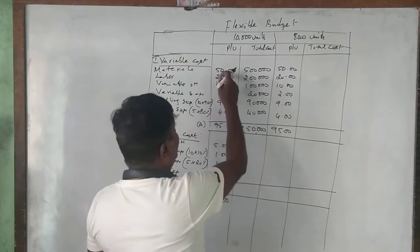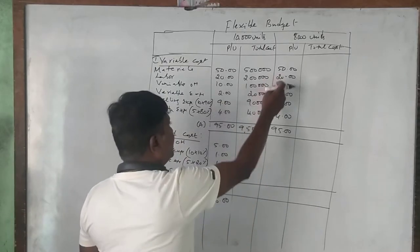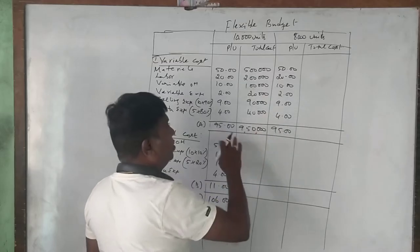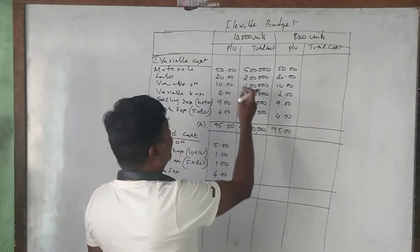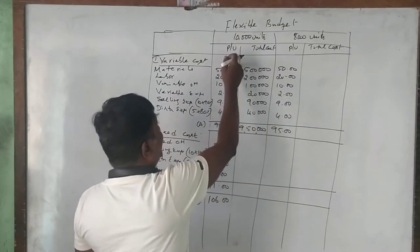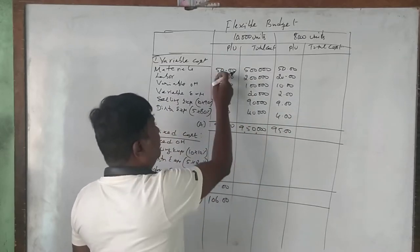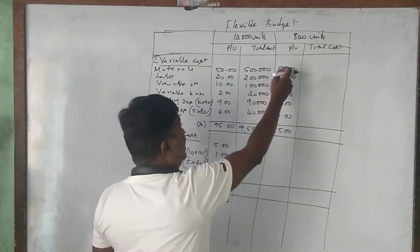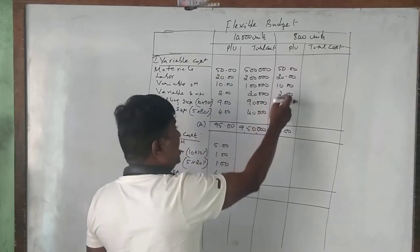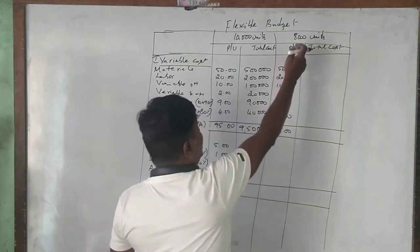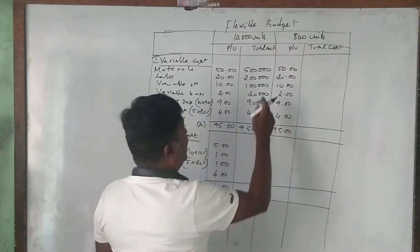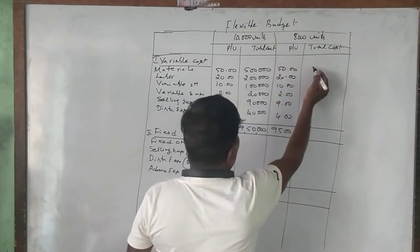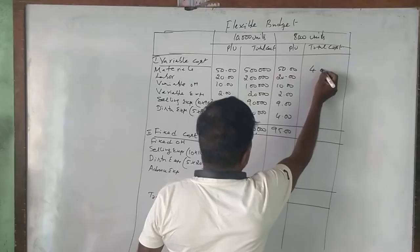The variable cost per unit remains the same for 8,000 units. All these values are now multiplied by 8,000: 50 × 8,000 = 4,00,000; material total 4,00,000; labor 8,000 × 20 = 1,60,000.